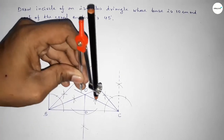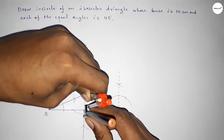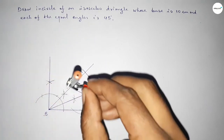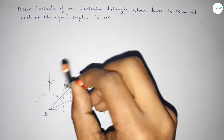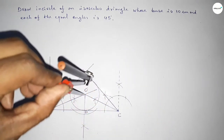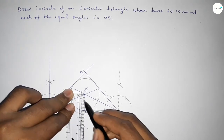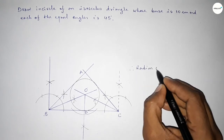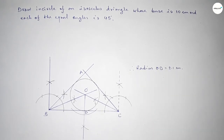Now taking the length OD to draw the incircle in the isosceles triangle. Drawing an arc — which represents the circle. This is perfect. The radius OD equals 2.1 centimeters. That's all, thanks for watching.